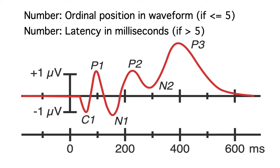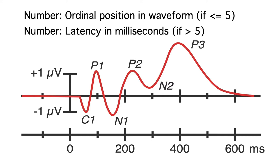In other cases, the number indicates the latency in milliseconds. For example, the visual N1 often peaks around 170 milliseconds, so it would be called N170. If the number is less than 5, you can assume it's the ordinal position. If it's greater than 5, you can assume it's the latency in milliseconds.